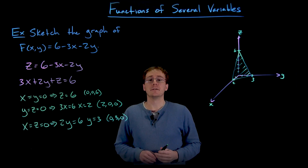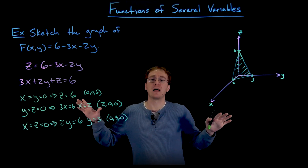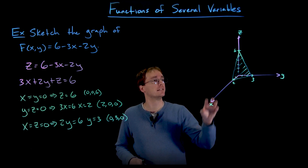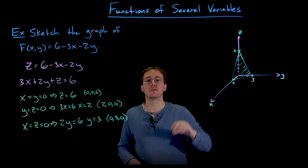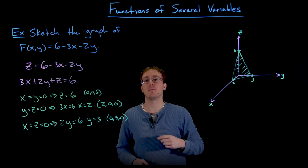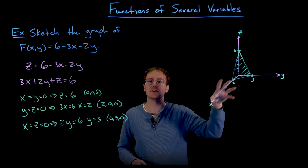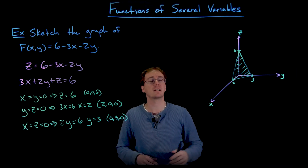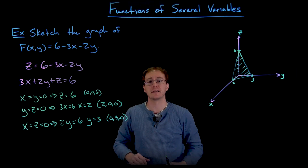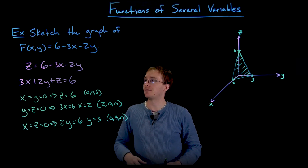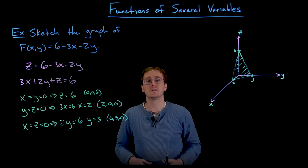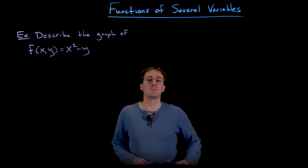Our plane is really an infinitely large flat surface, but what we're looking at here is the intersection of our plane in the first octant of three-dimensional space, where x, y, and z are all positive. If we look at just that piece of our plane and how it intersects this space, it looks like a little triangular piece of an infinitely large flat plane. With that, we've sketched the graph of our function of two variables.